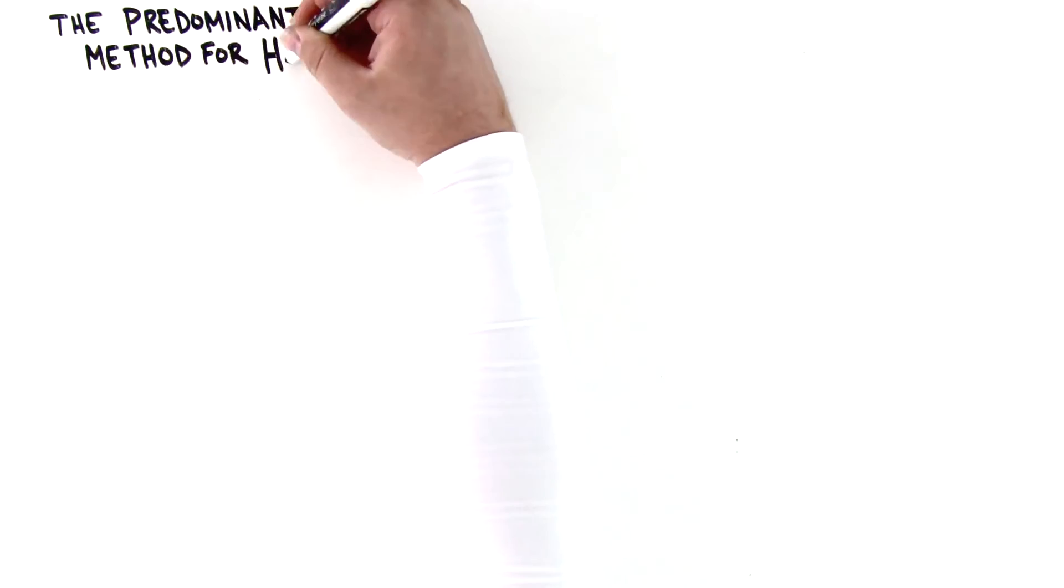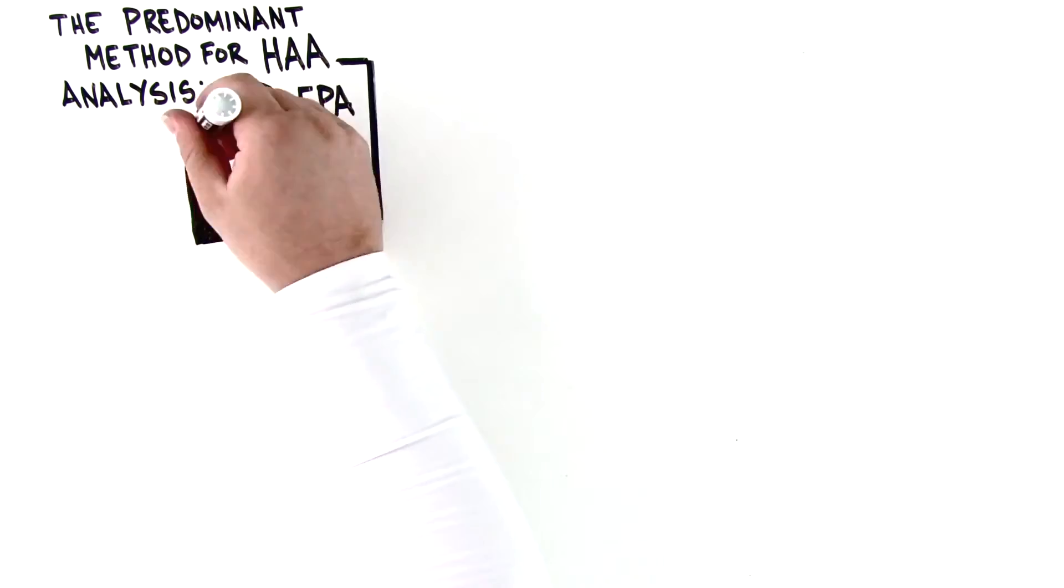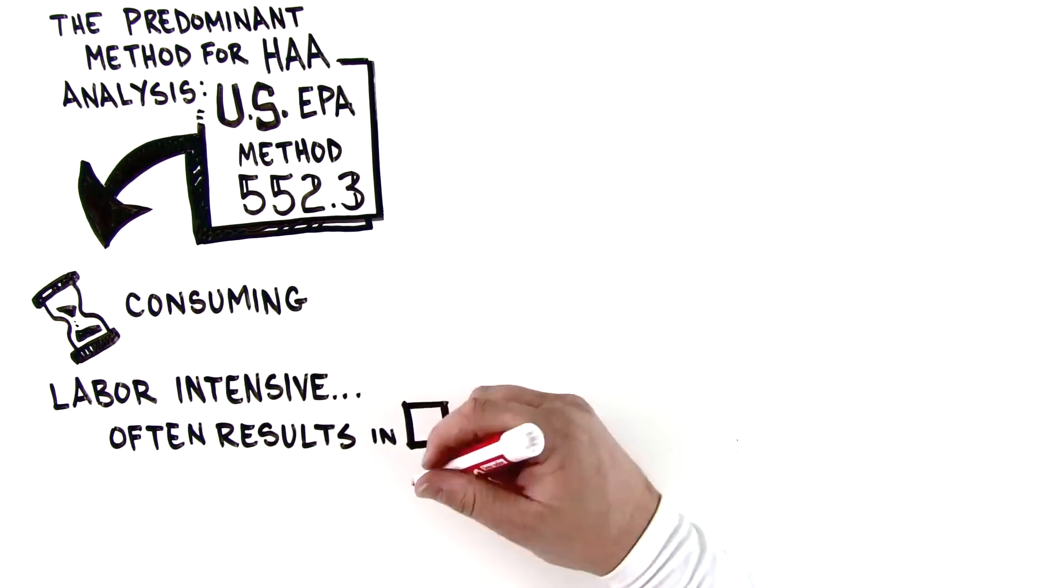The predominant method for HHA analysis, US EPA method 552.3, can be time-consuming, labor-intensive, and often results in operational errors.